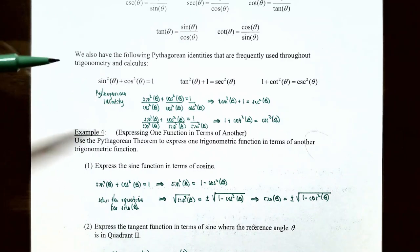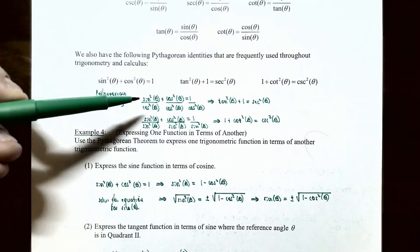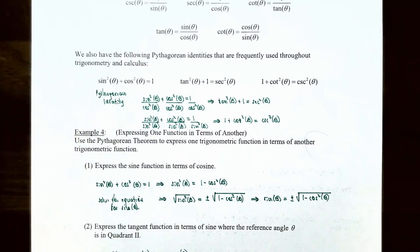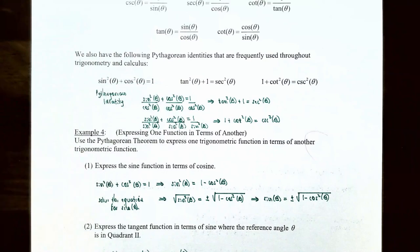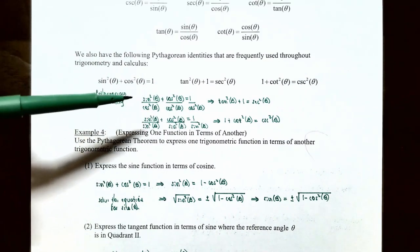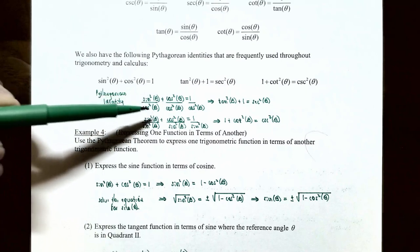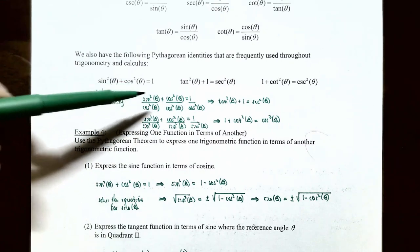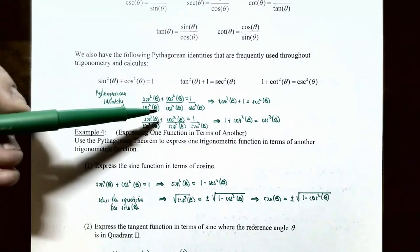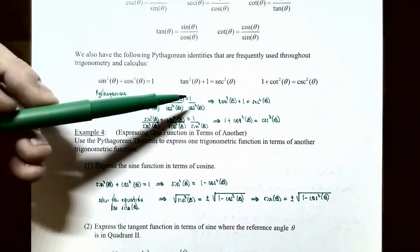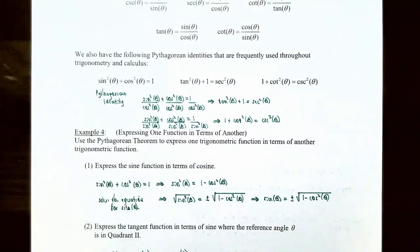If you take sine squared of theta plus cosine squared of theta equals 1 and divide all terms by cosine squared of theta on both sides, you get sine squared of theta over cosine squared of theta plus cosine squared of theta over cosine squared of theta equals 1 over cosine squared of theta. Sine squared over cosine squared is tangent squared of theta, and cosine squared over cosine squared is 1. On the right side, 1 over cosine of theta is secant of theta, so 1 over cosine squared of theta is secant squared of theta. This gives the Pythagorean identity: tangent squared of theta plus 1 equals secant squared of theta.